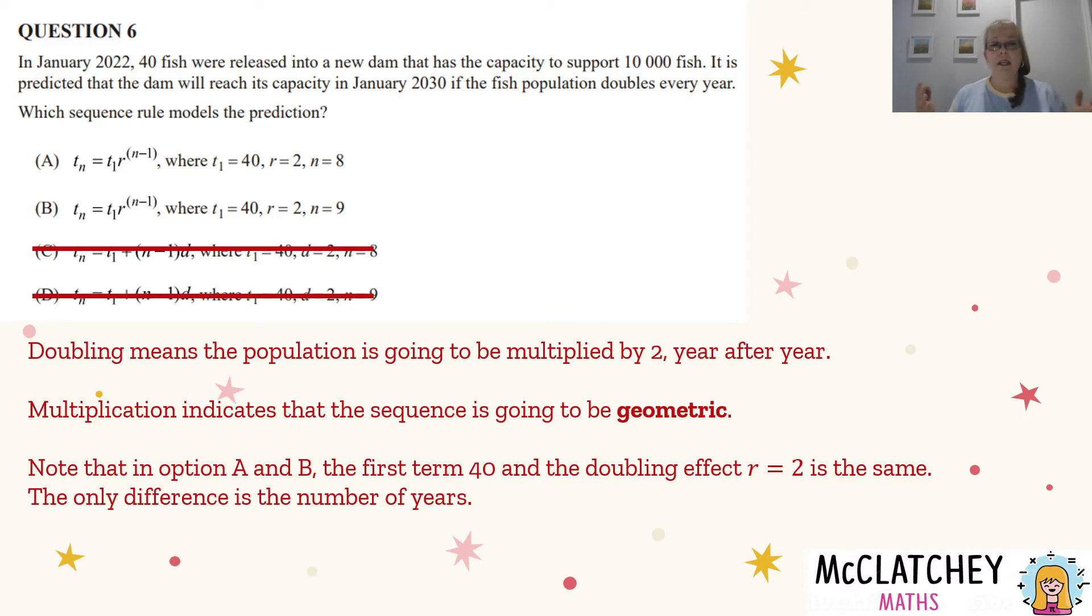So it's tempting to do 2030 take away 2022 and you get eight. However, when you do years, you actually need to not just do subtraction because you've got to count each year.